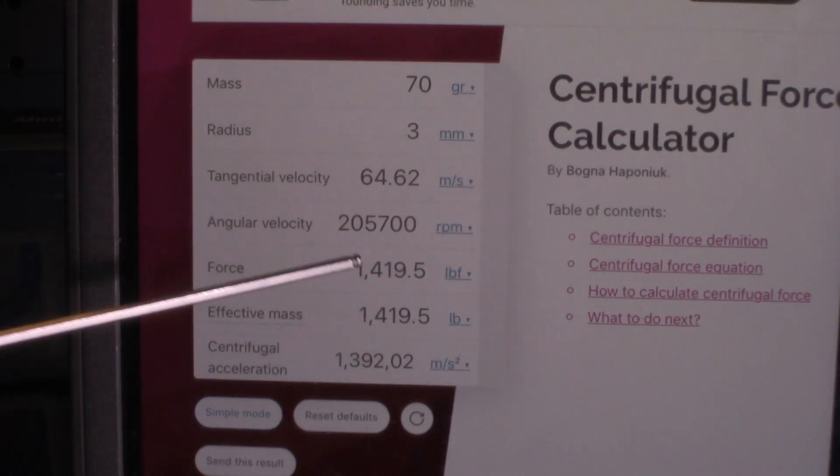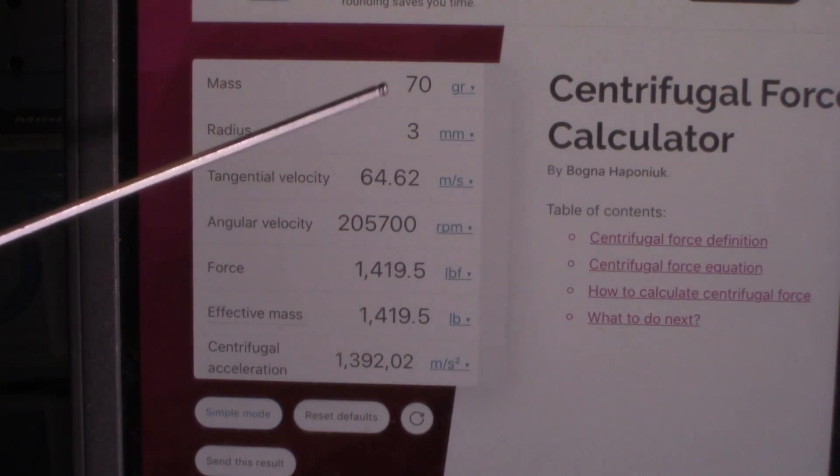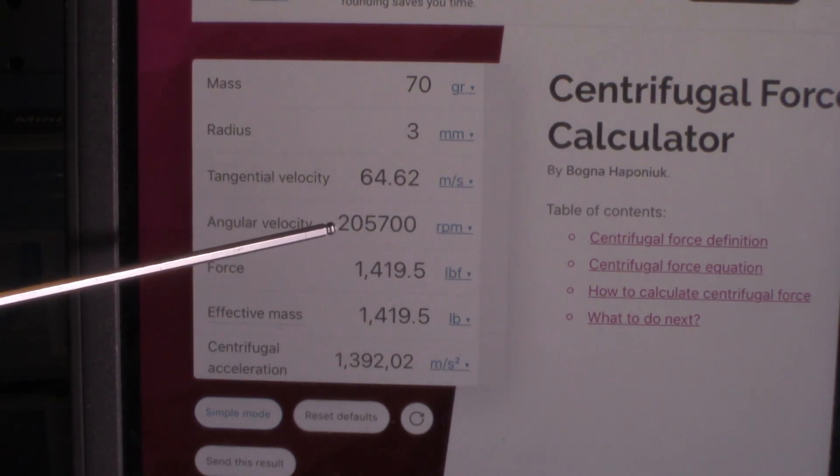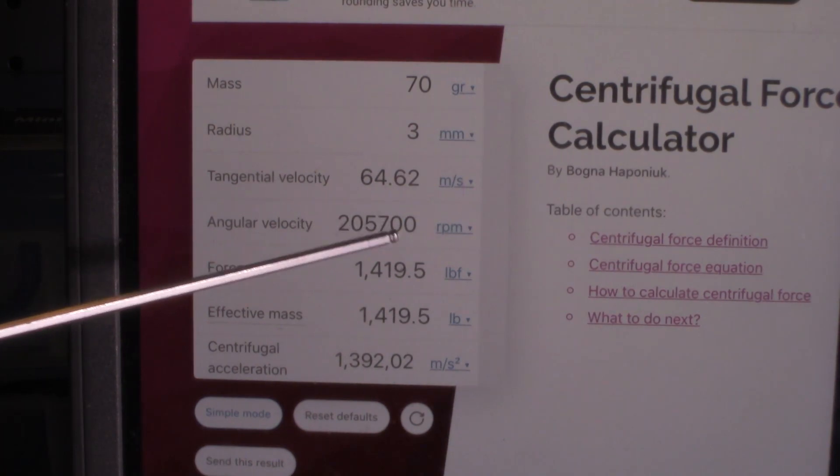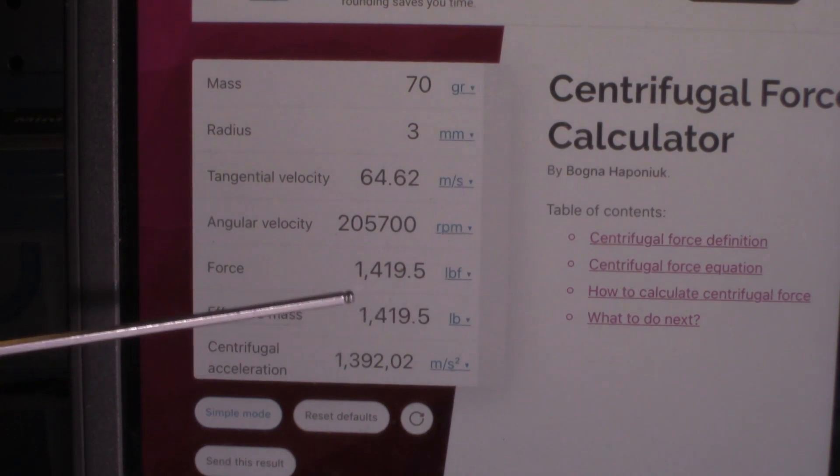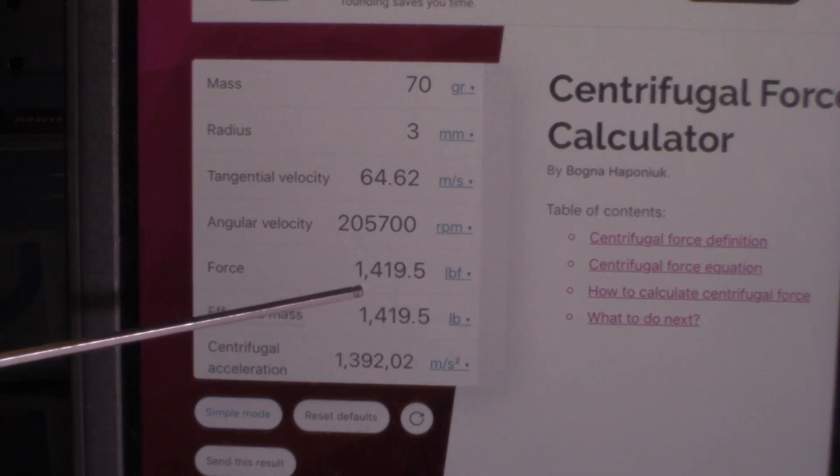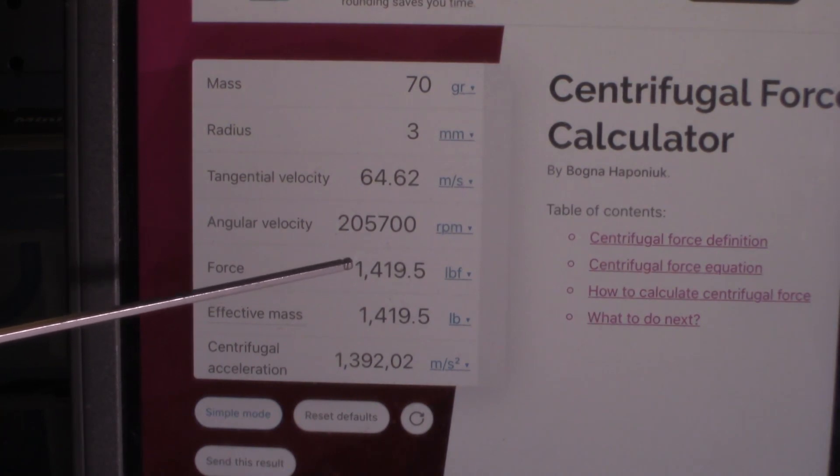Okay folks, as you can see here I have my 70 grain pill loaded at 4000 feet per second. And a 1 in 14 twist is producing 205,700 RPM. And that equates to, on the extent of the jacket in flight, 1,419 pounds of force trying to pull that jacket apart.